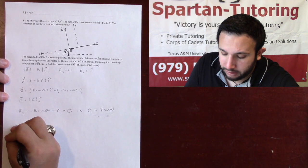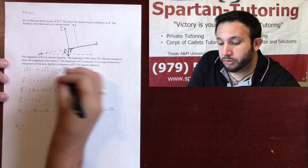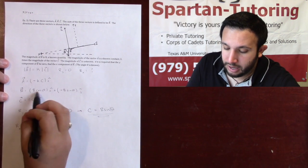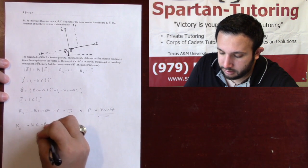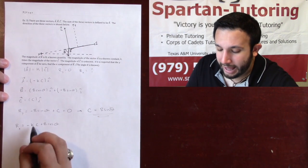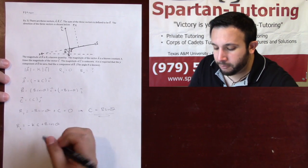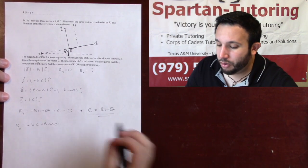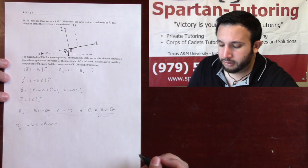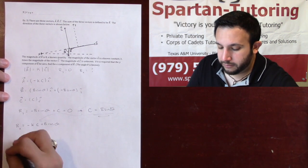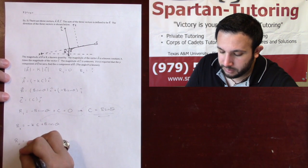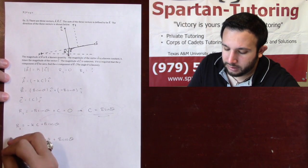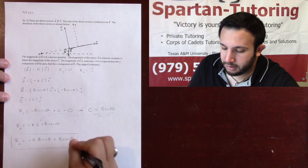To find Rx, the x-component of the resultant, add up all x-components: negative k times c plus b cosine theta. But we can't leave the answer with C in it since C is unknown. Substituting C equals b sine theta, the final answer for Rx is negative k times b sine theta plus b cosine theta. All of these values are known constants — that's how you deal with vectors on this first exam.